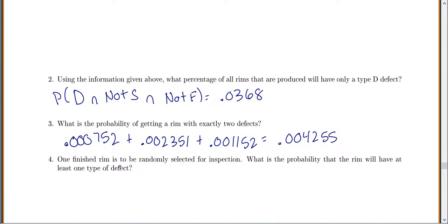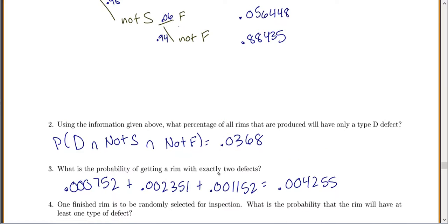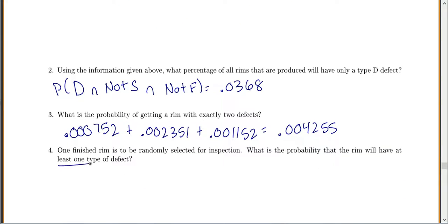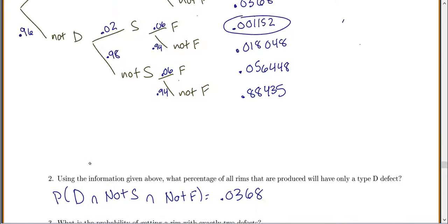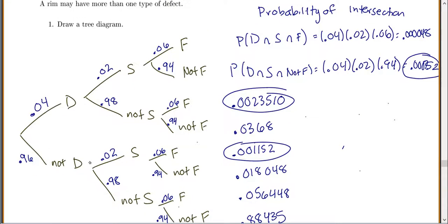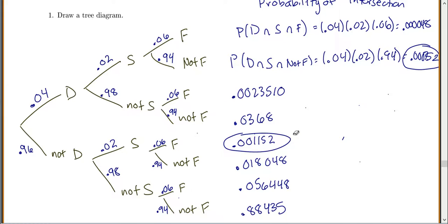Finally, one finished rim is to be randomly selected for inspection. What is the probability that the rim will have at least one type of defect? You should see at least one and automatically think of the complement rule. But if you didn't, the tree diagram makes this easy as well. If you want at least one defect, go through and circle everything that has at least one defect, which is everything but the bottom.